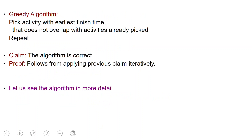Once we have this idea, we can develop the following greedy algorithm. We are going to iteratively pick the activity which has the earliest finish time that does not overlap with the activities already picked. This is justified by the previous observation — we can always pick the one with the earliest finish time. Then we must remove all those which are in conflict and iterate.